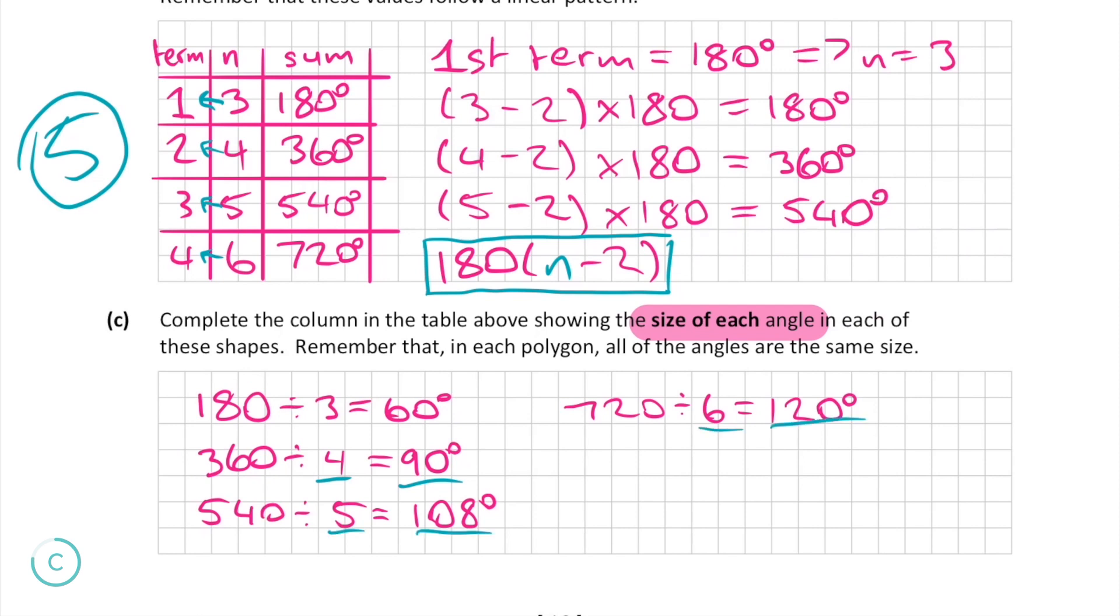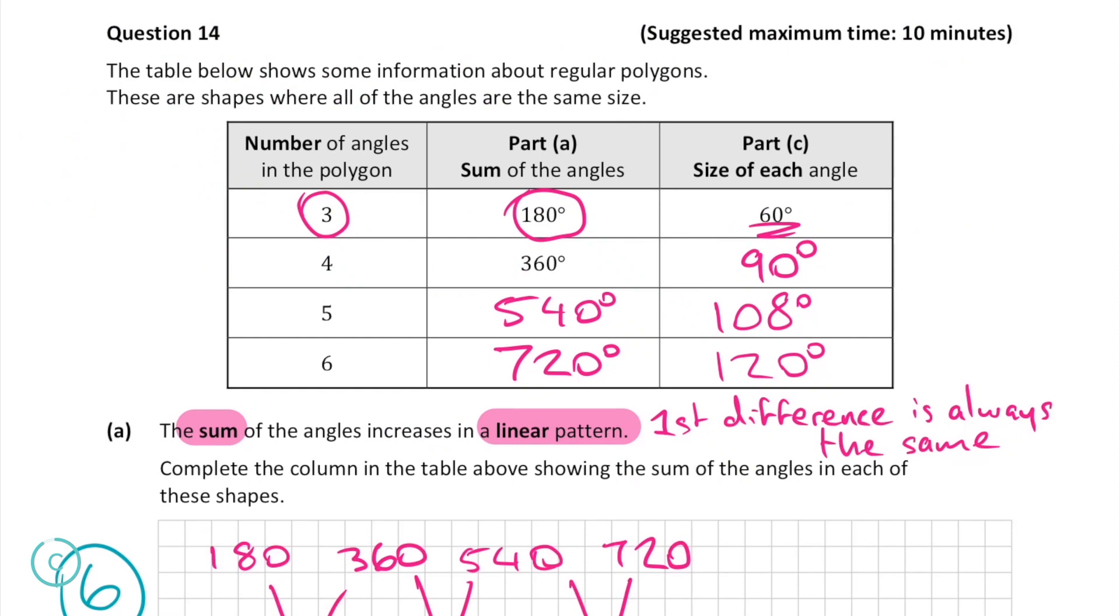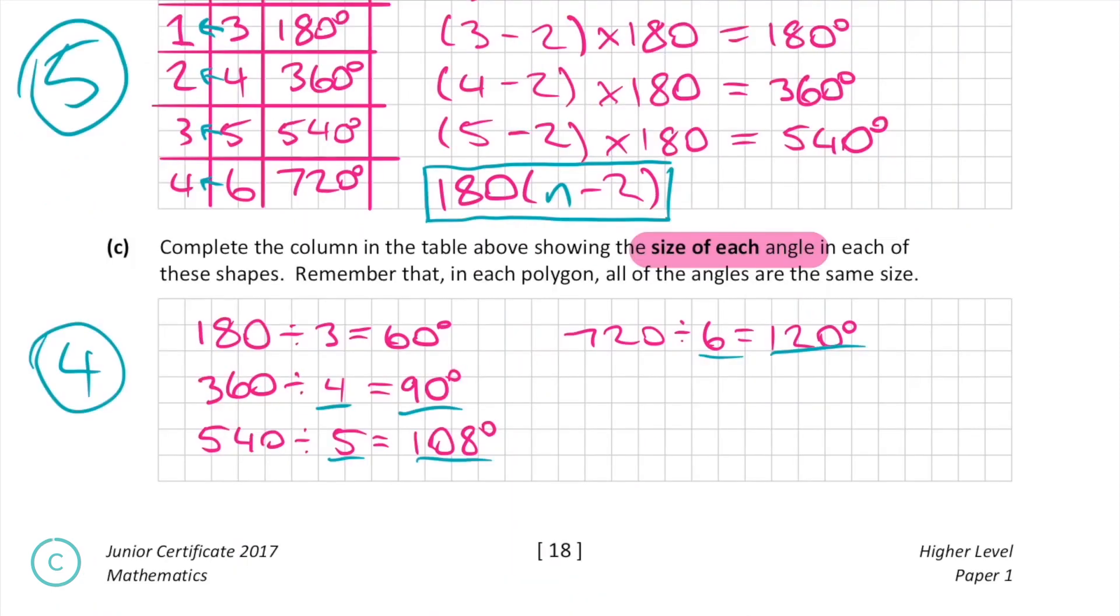Repeating this for the polygons with five and six angles we can work out that the angles are 108 and 120 degrees respectively. Now we have our table completely filled in and as a result we get four marks.